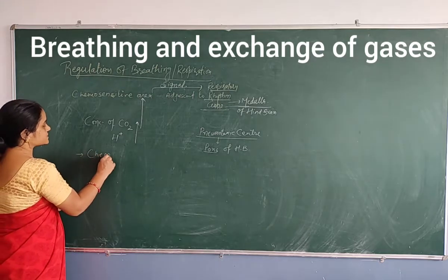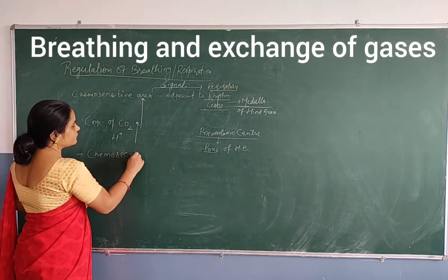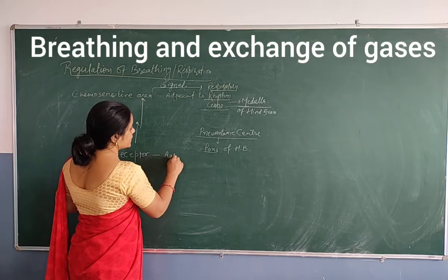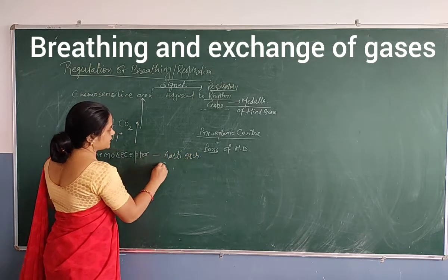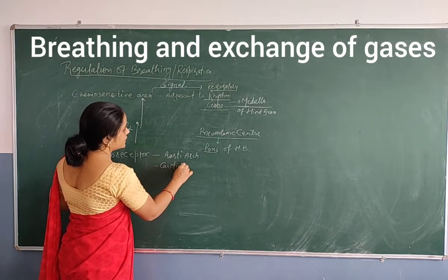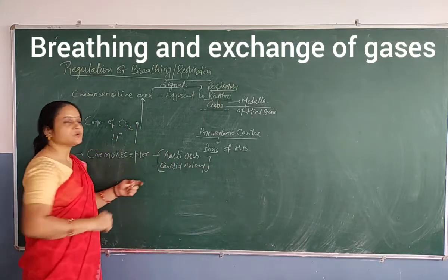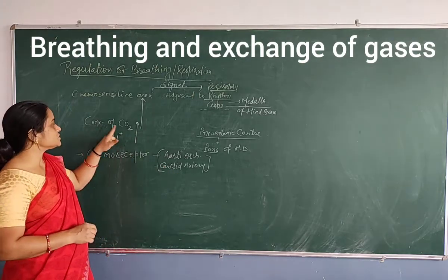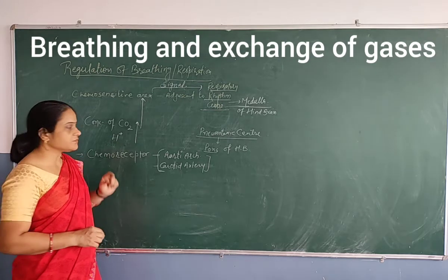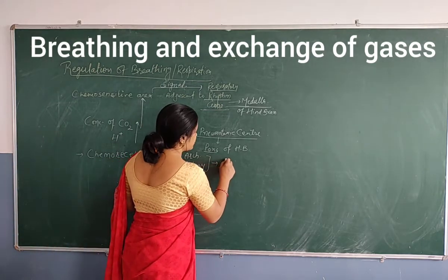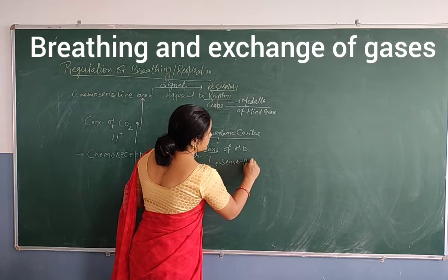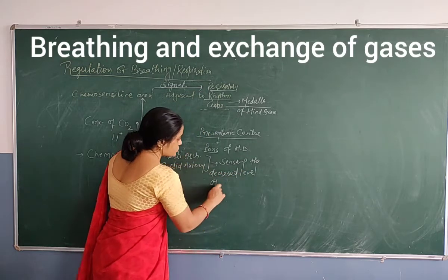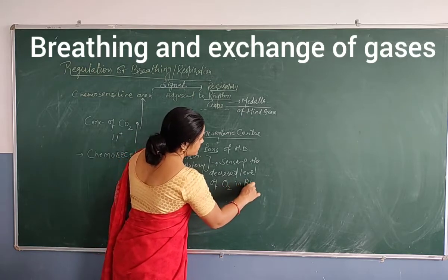There are also chemo receptors which are sensitive to both these conditions. They are present in the aortic arch as well as the carotid artery. Both are chemo receptor areas containing chemo receptor cells, activated under conditions of increased carbon dioxide and H+ concentration, as well as decreased levels of oxygen in the blood.